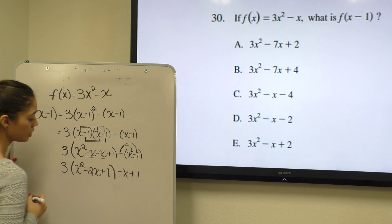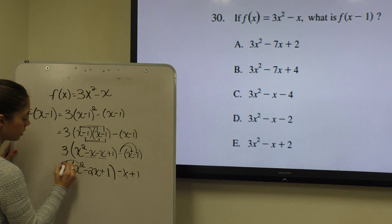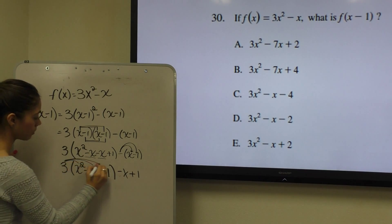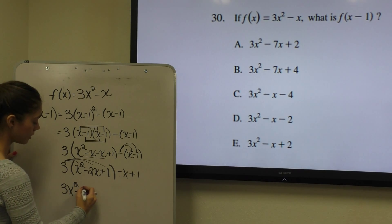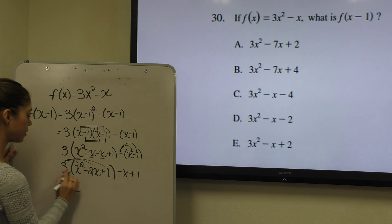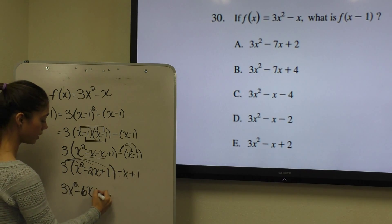So here we can combine, now we can distribute our 3 to all 3 terms inside our parentheses. To have 3x squared minus 3 times 2 is 6 and 3 times positive 1 is 3.